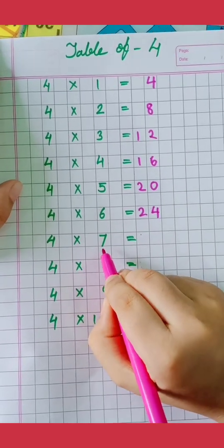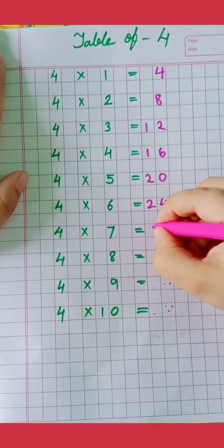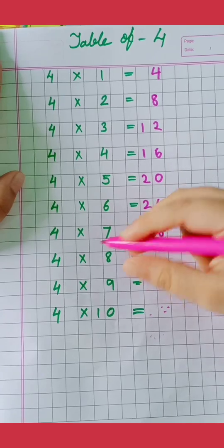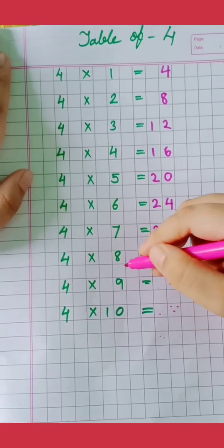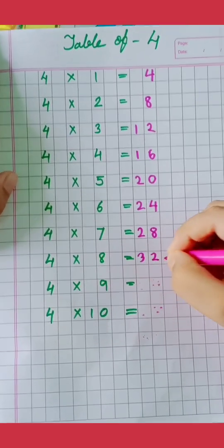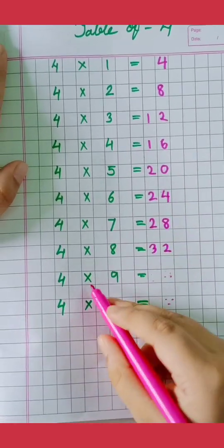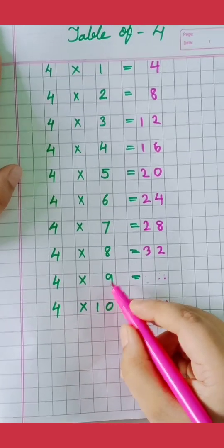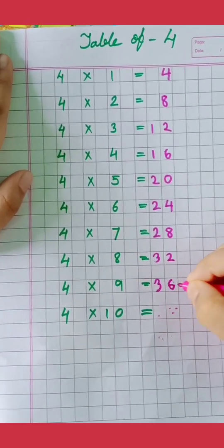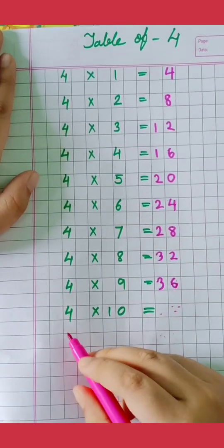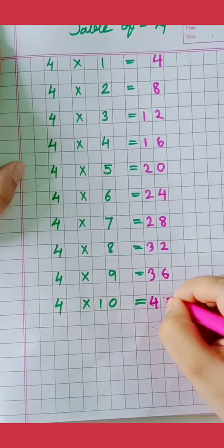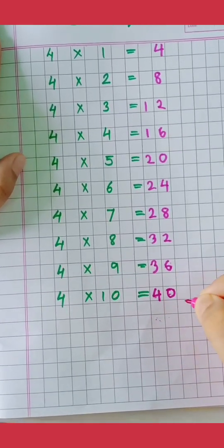4 7's are 28, 4 8's are 32, 4 9's are 36, 4 10's are 40.